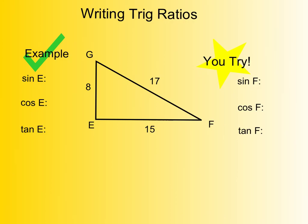Here we're going to look at writing specific trig ratios. The first thing I need you to do is change sine E, cosine E, and tangent E — instead of E, put the letter G. So sine of G, cosine of G, and tangent of G. Because if I were to look at E, E is my right angle — I can even draw my right angle box in there. The way I know that is because it's across from the largest side. With all trig, we're dealing with right triangles, so I cannot use trigonometry for the right angle.